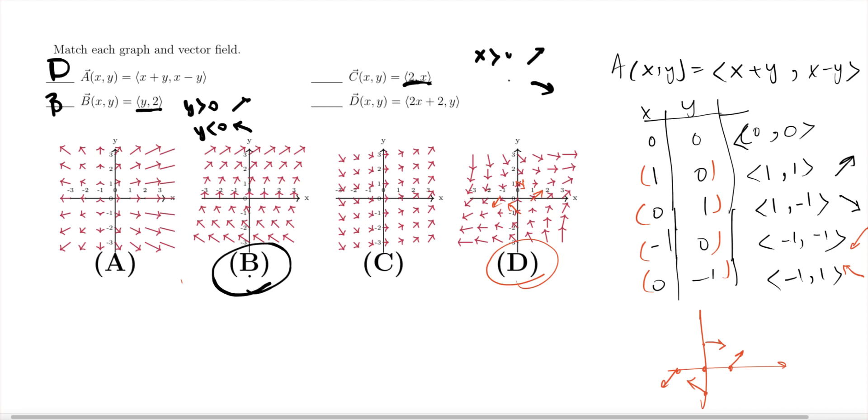The y component is going to be in the negative direction. The x component is always two, so that would be C. Then what is left is that one. I can see for x equal to negative two, the x component of the vector is going to be zero.